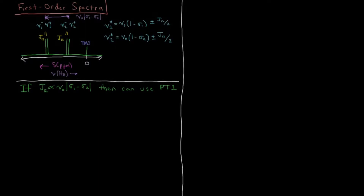In this video we're going to look at the conditions under which first-order perturbation theory is valid for computing the coupling constants and the splitting between coupled peaks in NMR. We have the spectrum here that we saw in the previous video. We've got two chemically distinguishable protons in a given molecule, so each set of peaks integrates to one proton. The center of them is separated by nu0 times sigma1 minus sigma2. Nu0 is the frequency of the spectrometer and sigma1 and sigma2 are the shielding constants of proton1 and proton2 respectively.